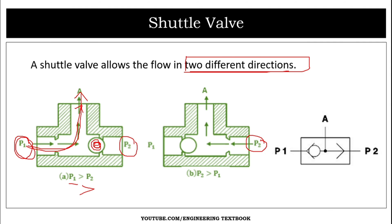In case two, if P2 pressure is greater, oil flows from P2 to outlet port A, and port P1 is blocked by the valve. So the shuttle valve allows flow in two different directions — from P1 or from P2 — depending on which inlet pressure is greater. This is the symbolic representation showing inlet ports P1 and P2 and outlet port A with a ball blockage.